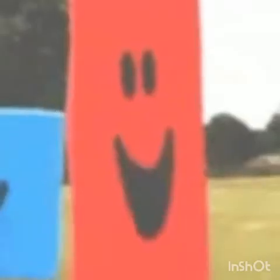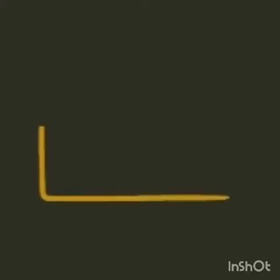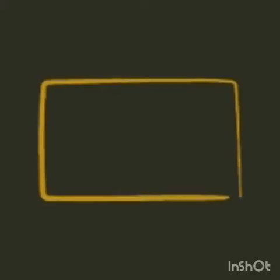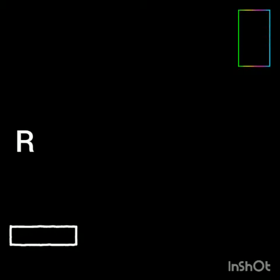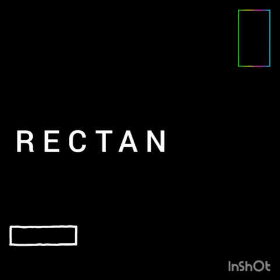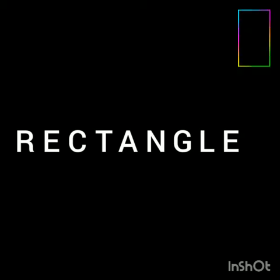Rectangle. A rectangle also has four sides and four angles but it does not have four equal sides. Its opposite sides are parallel and equal. The spelling of rectangle is R-E-C-T-A-N-G-L-E. Rectangle.